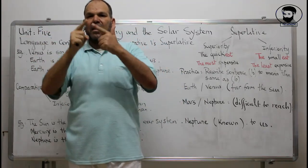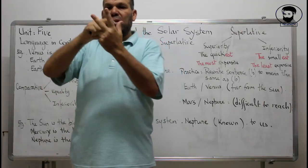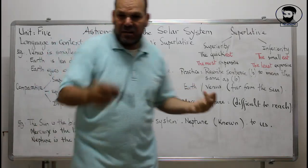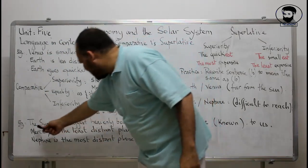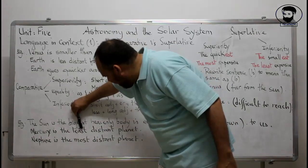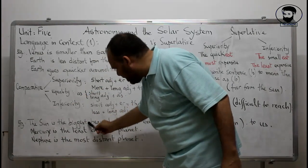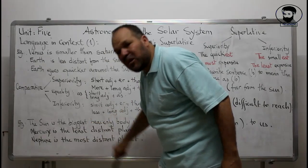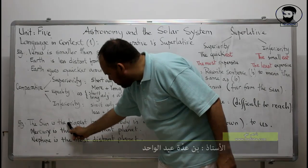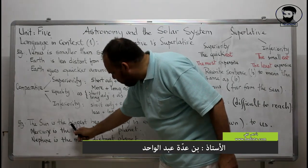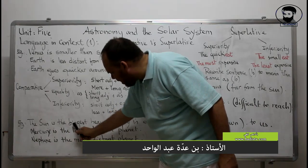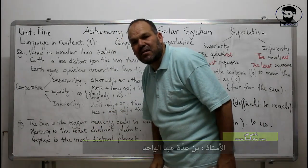For example, if you have Earth, Saturn, and Jupiter together, you use the superlative, not the comparative. For example: 'The Sun is the biggest.' Here we look at the word 'big.' Because we add -EST, and big has the pattern consonant-vowel-consonant, we double the final consonant: B-I-G becomes biggest.